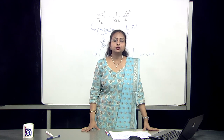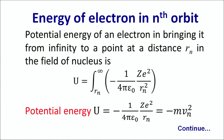Now, let us determine the energy of the electron in the n-th orbit. For this, we need to find out the potential energy of the electron. The potential energy of an electron in bringing it from infinity to a point at distance rn in the field of the nucleus is given by u = integral of −(1 / 4πε₀) × ze² / rn². When we integrate this equation, we get potential energy = −(1 / 4πε₀) × ze² / rn. If we substitute the value of rn, the potential energy equals −mvn².